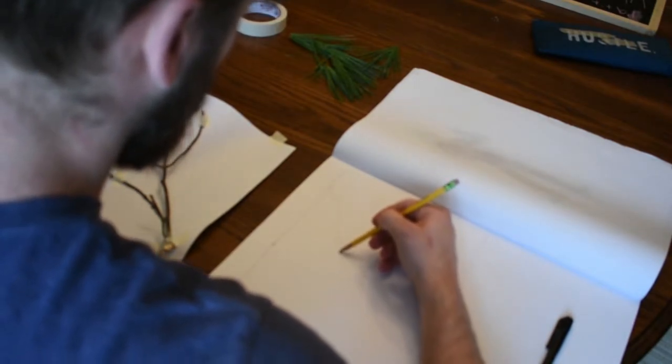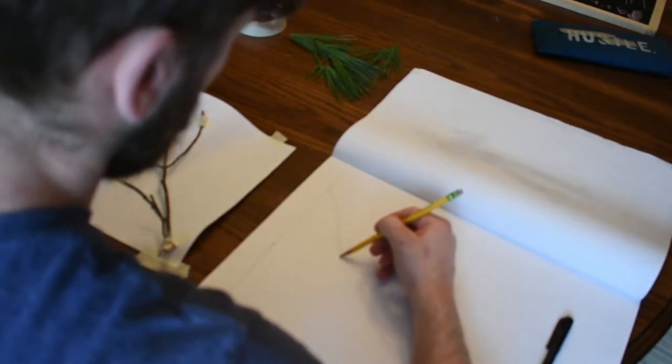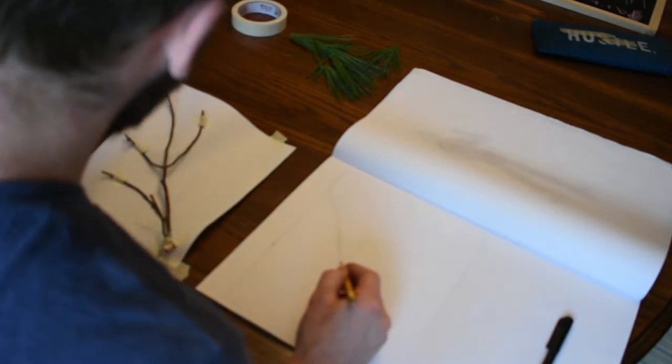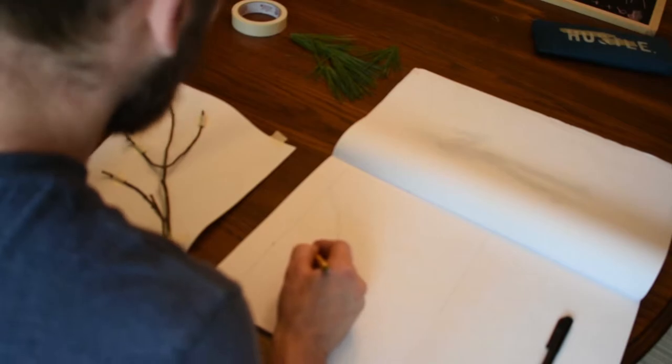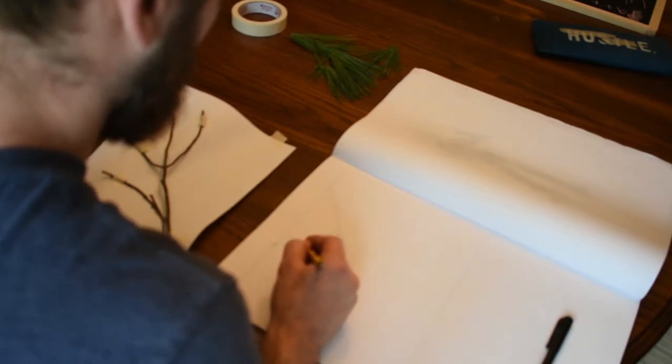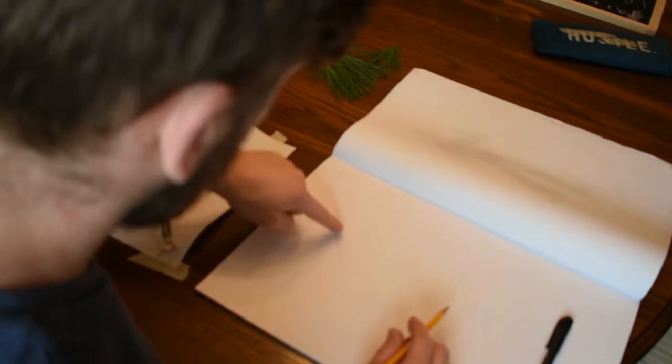Now the white shapes are the negative space. So when we're done with this, what we're going to have is a negative space drawing. When it's all done, what's white on our actual branch will be black in our drawing, and the branches will be left white.